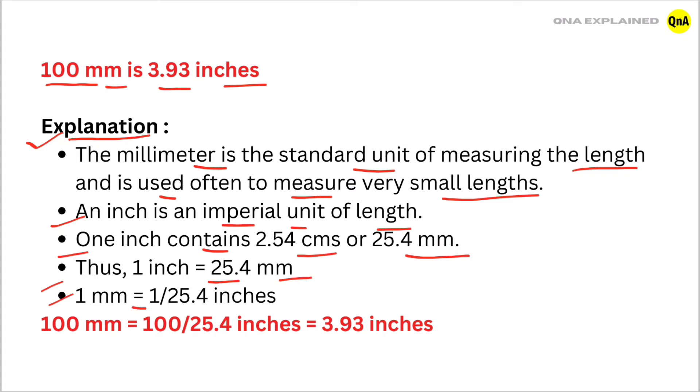1 mm equals 1 divided by 25.4 inches. 100 mm equals 100 divided by 25.4 inches, which equals 3.93 inches.